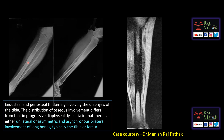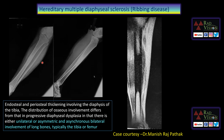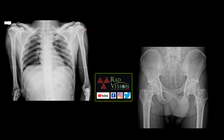The next case shows diffuse endosteal and periosteal thickening involving the diaphysis of the tibia. On MRI there is hypointense diaphyseal sclerosis with medullary cavity narrowing — thanks to Dr. Manish Raj Patak for contributing. This is hereditary multiple diaphyseal sclerosis or Ribbing's disease, which resembles progressive diaphyseal dysplasia but with unilateral or asymmetrical and asynchronous bilateral involvement.